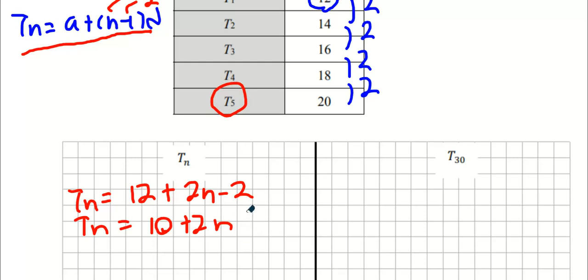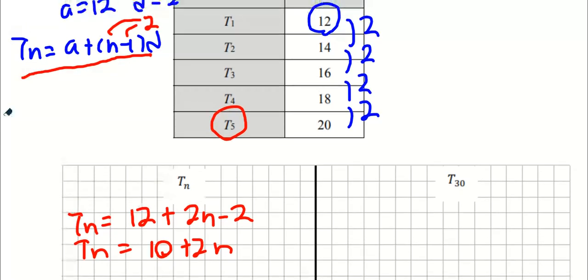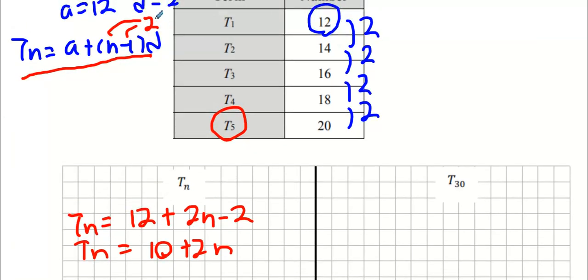It's what's called the N term. TN means give me a formula that can give me any term you want. It's like a universal formula. The D value was 2, and I multiplied it by 2 to get 2N minus 2. This formula now is going to tell me what T30 is. All I have to do is replace N with 30, and you get an answer of 70.